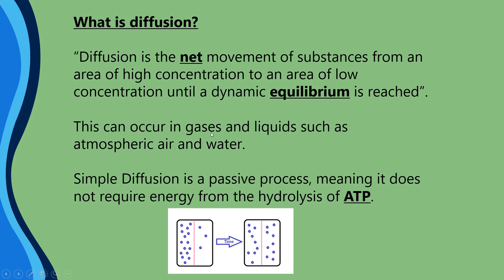Diffusion can occur in gases such as atmospheric air — the oxygen that we breathe in, the nitrogen that's in the air, and all kinds of gases in our atmosphere: argon, carbon dioxide. But diffusion can also occur in liquids. Think about marine ecosystems — there's the diffusion of oxygen and carbon dioxide occurring in oceans and fresh water.